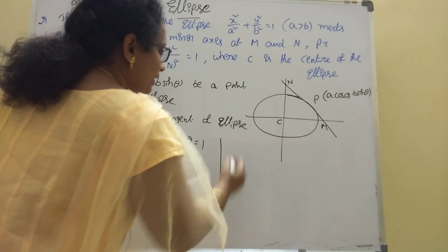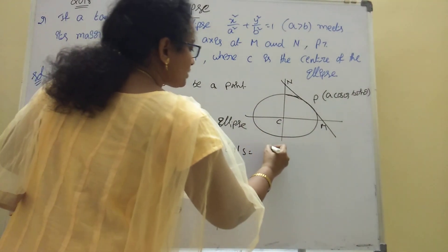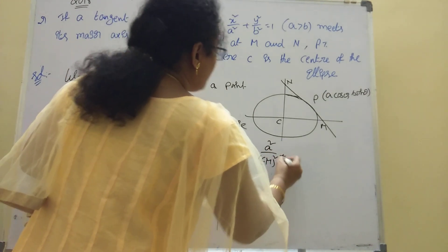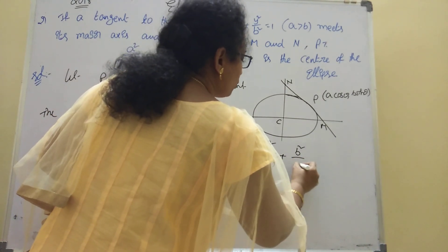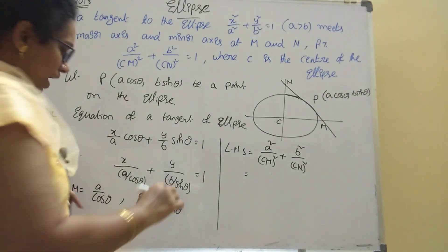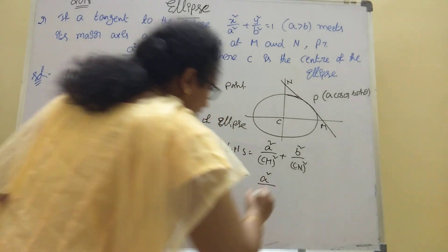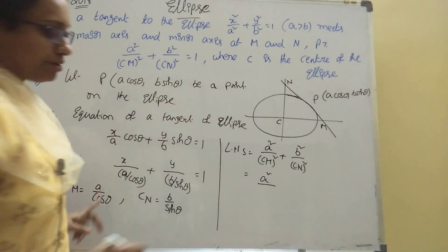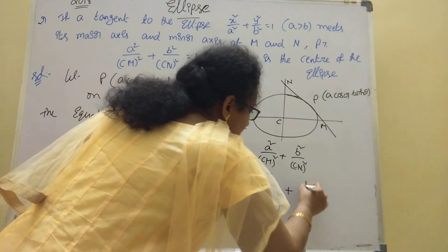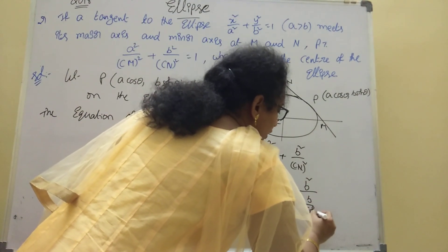Now compute the LHS: a²/CM² + b²/CN². Substituting CM = a/cosθ, we get a²/(a/cosθ)² = a² × cos²θ/a² = cos²θ. And b²/(b/sinθ)² = b² × sin²θ/b² = sin²θ.